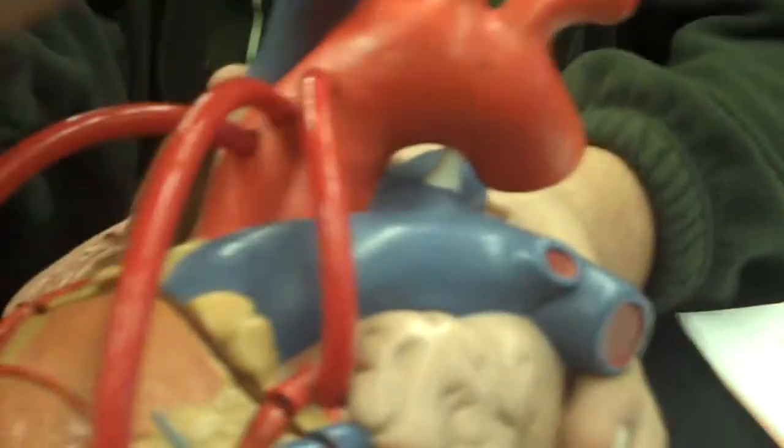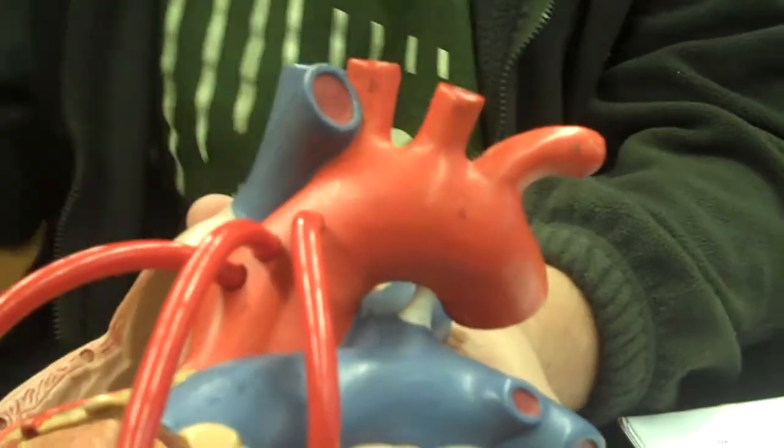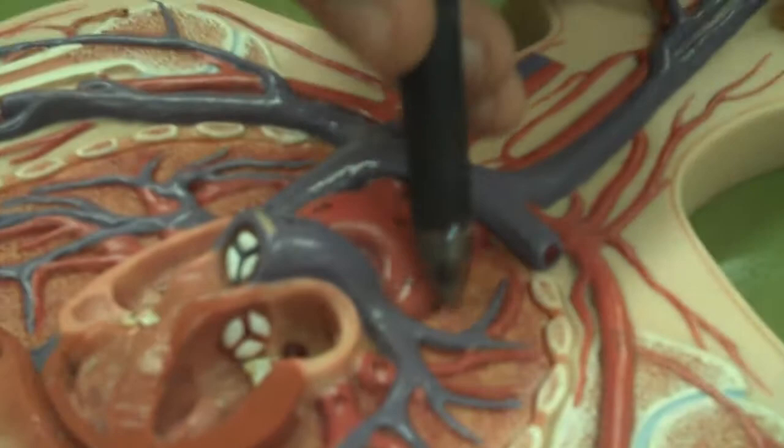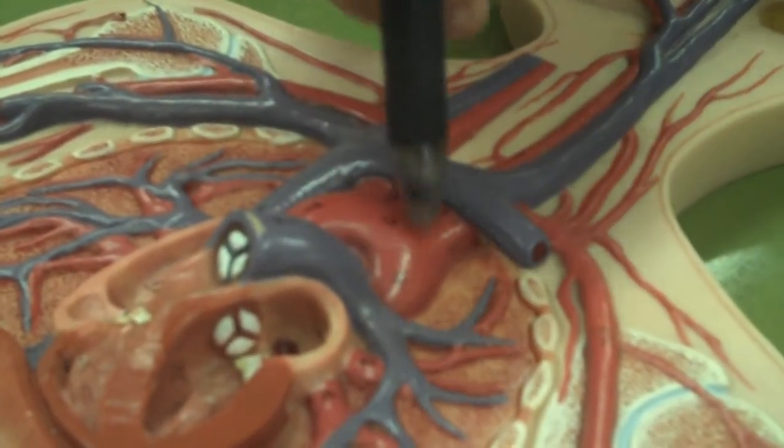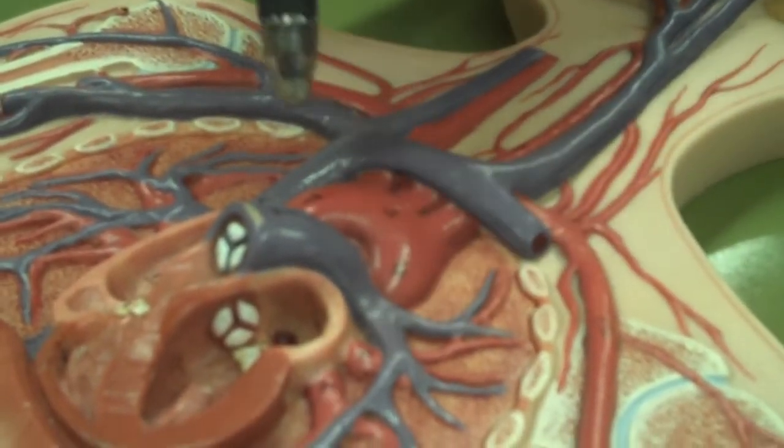The arch of the aorta is just where the aorta arches. You can see it in this model. It's just this region right here where you have these three arteries coming out of it. That's the arch of the aorta.